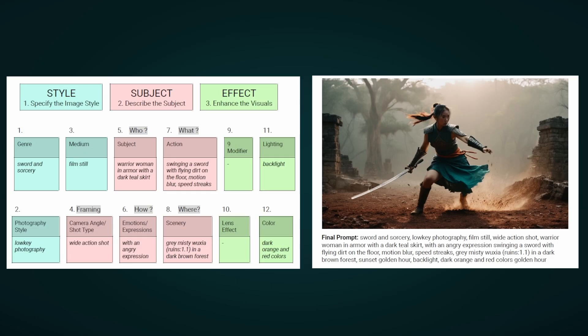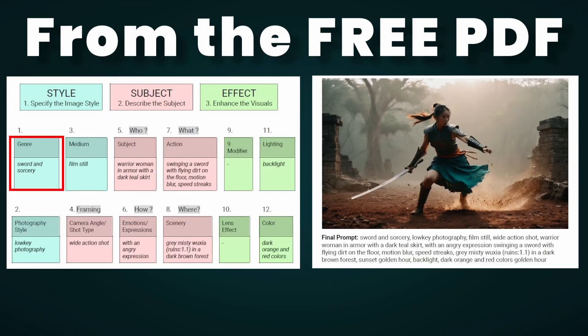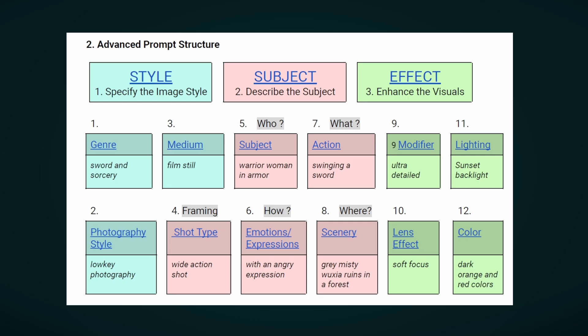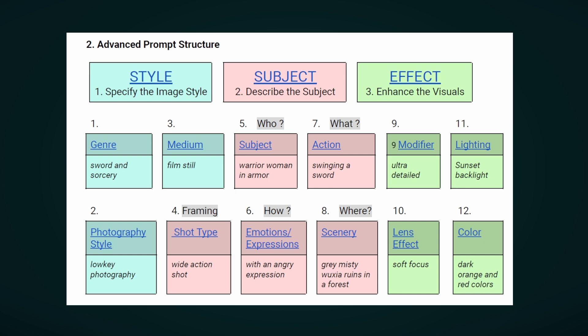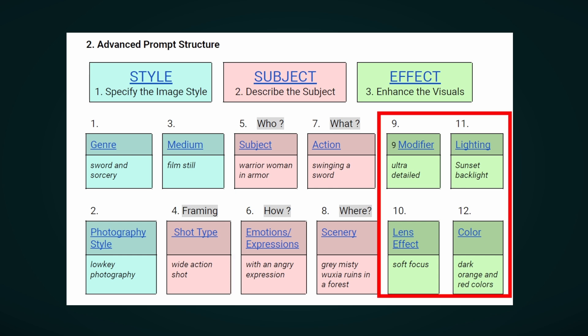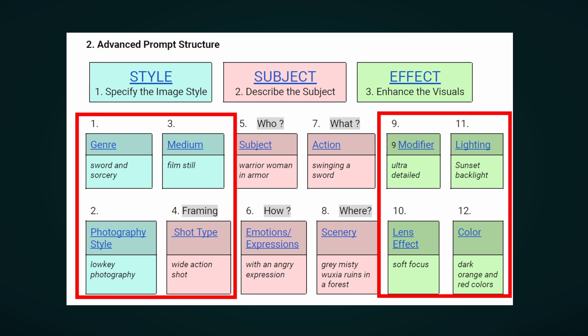Now let's dive into creating consistent image styles and characters for better storytelling. Using the advanced prompt structure, focus on two key elements. First, use strong iconic keywords — for example, in our Warrior Woman image, we used 'Sword and Sorcery' for the genre and added 'Wuxia' to the scenery. Second, specify your image style with a fixed genre and medium, or a photography style. Describe your subject and use effects like lighting and color to set the mood for your series of images. With this foundation, you can start writing stories and create various shots by changing the shot type, action, scenery, and the subject's emotions. As long as you keep most keywords in the style layer and effect layer the same, your image style will remain consistent.